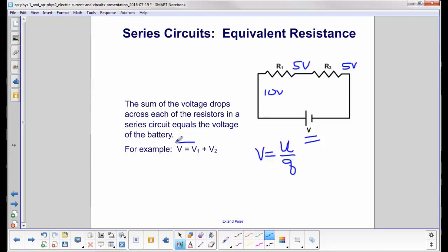So the total voltage delivered by the battery equals V1 plus V2, commonly called the voltage drop across R1 and the voltage drop across R2.